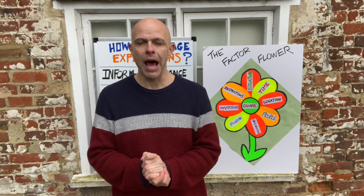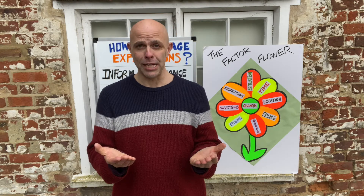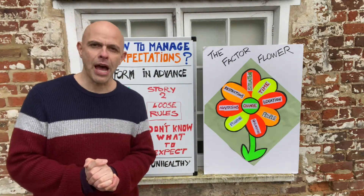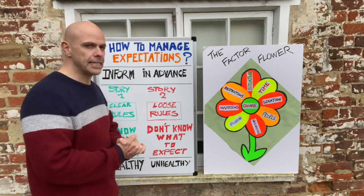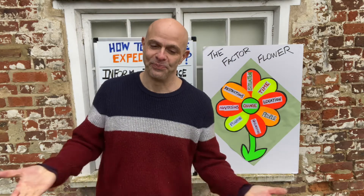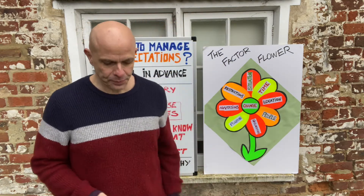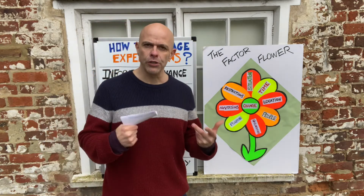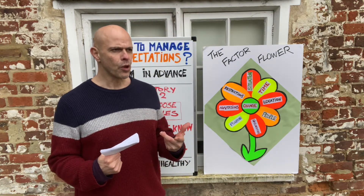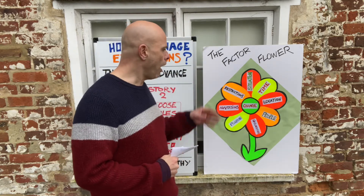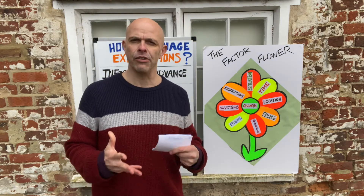So now I'm going to teach you how to set expectations. I'm going to show you how to set high expectations in story one and how to set low expectations in story two. Obviously they will have different outcomes. Before we go into the methods, I need to introduce you to a matrix — a model. I created it myself. It's called the Factor Flower.